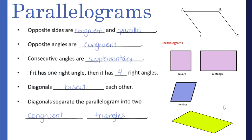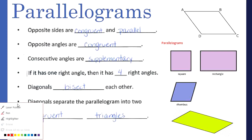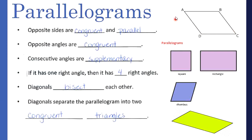Starting on the left side of the foldable, the first type of quadrilateral is parallelograms. Parallelograms have opposite sides that are congruent and also parallel — that's why it's called a parallelogram. Opposite angles are congruent, so angle A is congruent to angle C and angle B is congruent to angle D. Consecutive angles are supplementary, meaning angle D plus angle C equals 180°, and angle A plus angle D equals 180°.